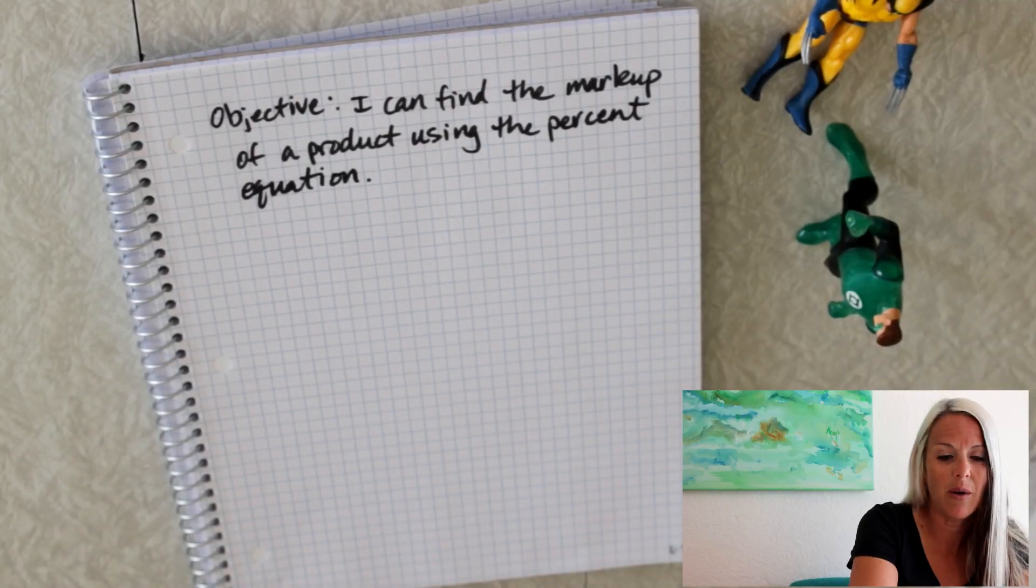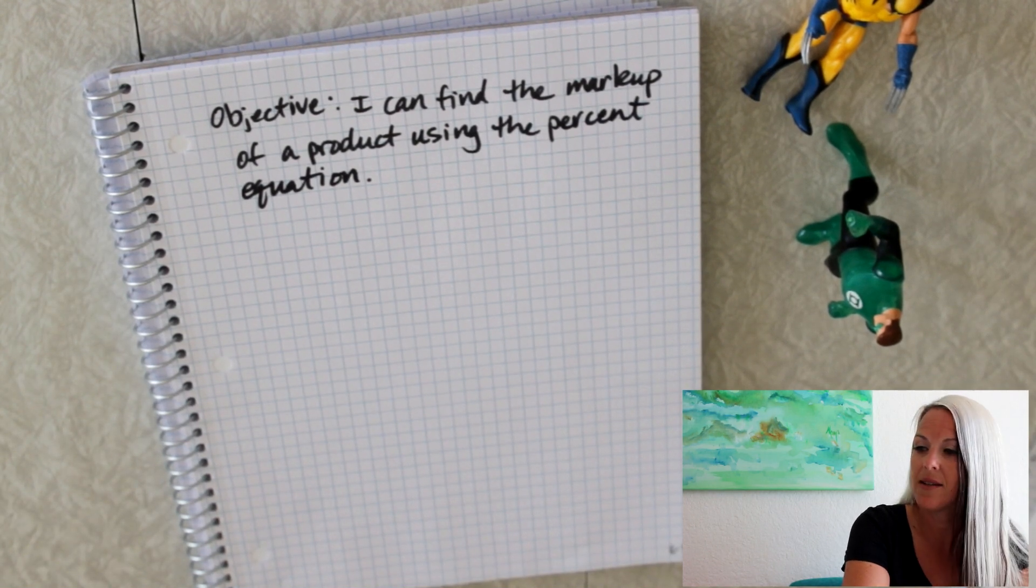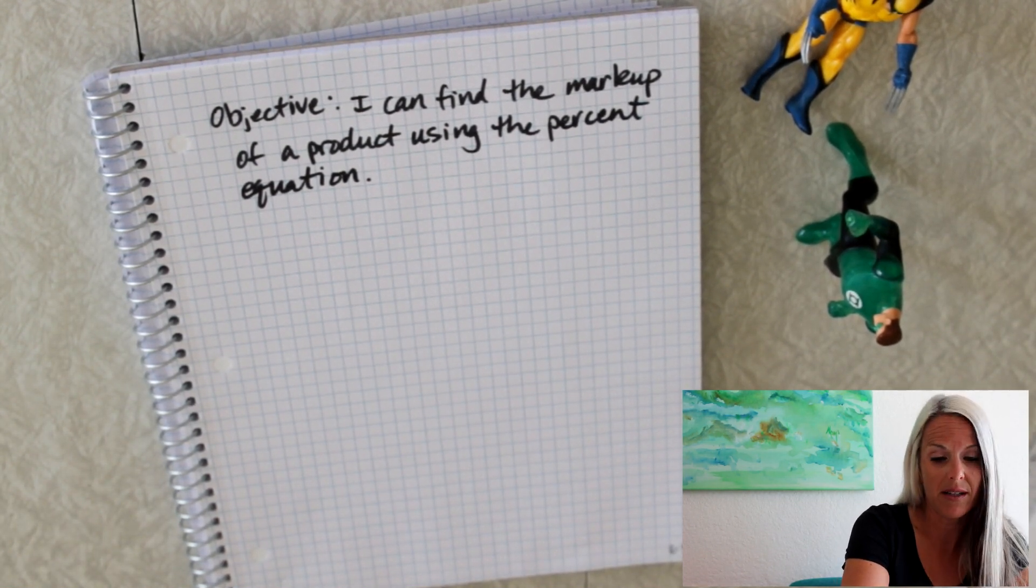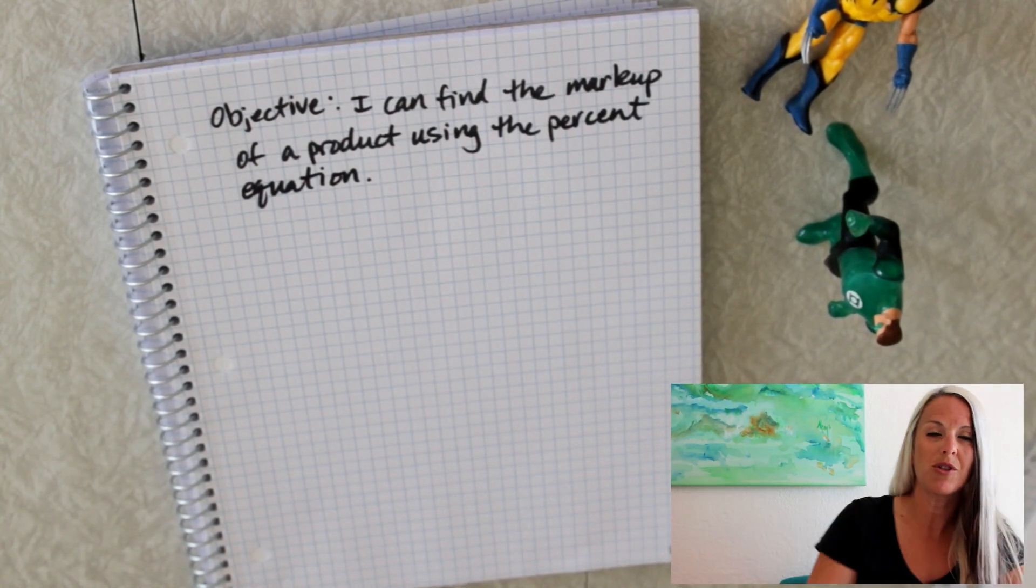If you want a reminder on last time's lesson about discounts, go ahead and click on the link in the description below this video. But for right now, we're going to move on with today's objective. So our objective is I can find the markup of a product using the percent equation. So now just remember what that percent equation was from last time and we're going to be writing it down in our notes in just a second. But it was A equals P times W or part of the whole equals percent times the whole.